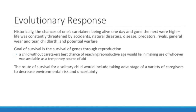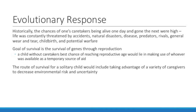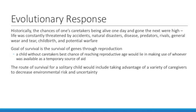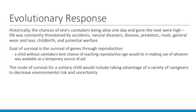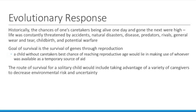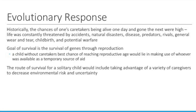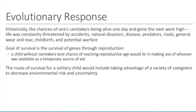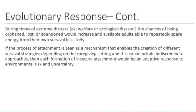The chances of one's caregivers being here one day and then gone the next were extremely high, making this the sort of stable, adaptive problem which could generate a heritable psychological solution. The route to survival for a solitary child would include keeping an eye out for their best chance, and in the best of cases, this would be in the tribal context of kin accustomed to cooperative caregiving. Attachment that was not reciprocated would create a disadvantage by reducing opportunism and flexibility. Each formation of insecure attachment would be an adaptive response to environmental risk and uncertainty.